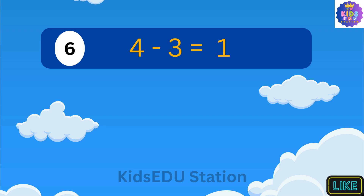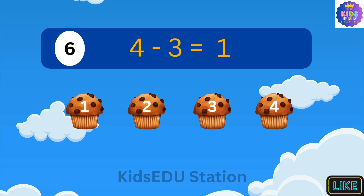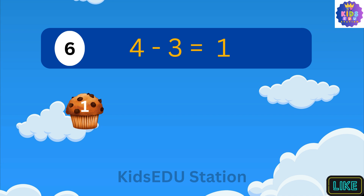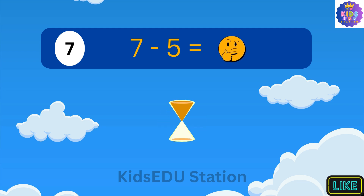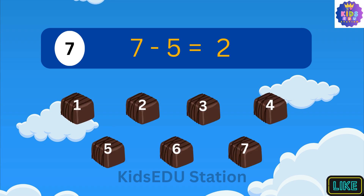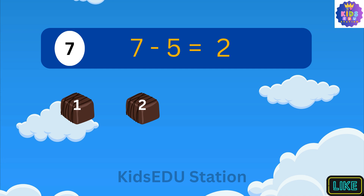What is 7 minus 5? 7 minus 5 is 2. Imagine you have 7 chocolates. You ate 5 of them. Now you have 1 and 2 chocolates left.